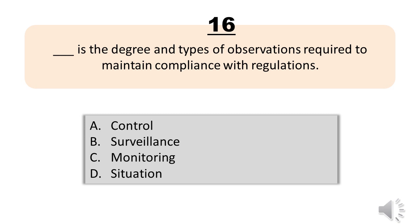Number 16. Blank is the degree and types of observations required to maintain compliance with regulations. A. Control. B. Surveillance. C. Monitoring. D. Situation. The correct answer is Letter B. Surveillance.